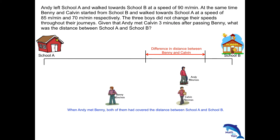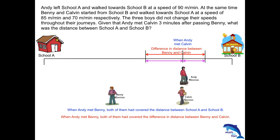Now let's imagine three minutes later when Andy met Calvin. This is the distance covered by Andy and this is the distance covered by Calvin. When you add up these two distances, it equals the distance between the two schools. We can work out the gap between Benny and Calvin: take the combined speed of Andy and Calvin and multiply by three minutes, giving a distance of 480 metres. So Calvin was 480 metres behind Benny when Andy met Benny.